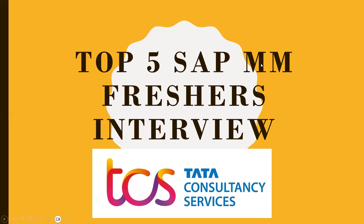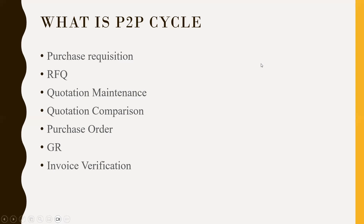First question: What is procure to pay? It starts with purchase requisition and ends with accounts payable. Based on the purchase requisition, you create a request for quotation, then quotation maintenance, quotation comparison, purchase order creation, goods receipt, and finally invoice verification and accounts payable.